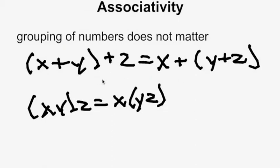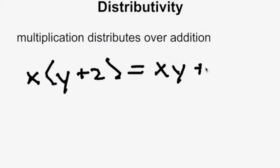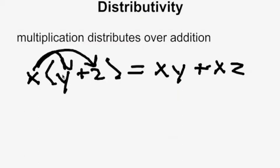The next field axiom is distributivity, which states that multiplication distributes over addition. So if you have x times (y plus z), it equals xy plus xz. The x distributes over the addition inside the parentheses.